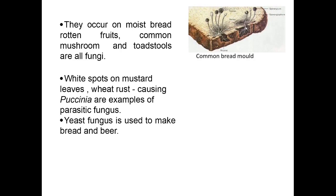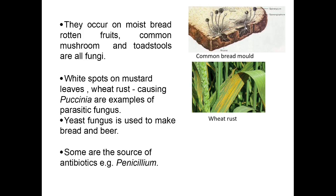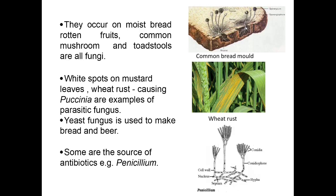White spots on mustard leaves, wheat rust causing Paxinia are examples of parasitic fungus. Yeast fungus is used to make bread and beer. Some are source of antibiotics, for example, Penicillium. You can look at these examples in the diagrams.